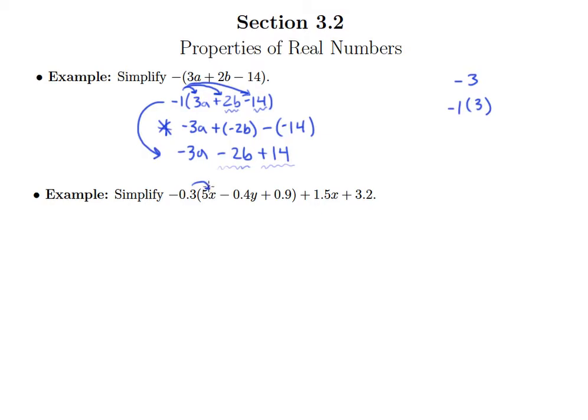We'll distribute negative 0.3 through all three terms using the shortcut method. Negative 0.3 times 5x gives negative 1.5x. Negative 0.3 times negative 0.4y gives plus 0.12y. Negative 0.3 times positive 0.9 is negative 0.27. Notice how I use minus and negative interchangeably in my thinking.